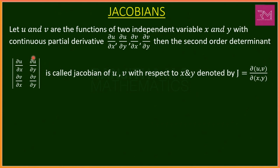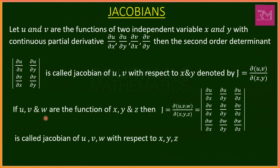This second order determinant is the definition of the Jacobian of u, v with respect to x, y. Similarly, if u, v, w are functions of independent variables x, y, z, then the Jacobian for u, v, w with respect to x, y, z is denoted by the 3×3 determinant: del u/del x, del u/del y, del u/del z, del v/del x, del v/del y, del v/del z, del w/del x, del w/del y, and del w/del z. This is the definition of Jacobians.